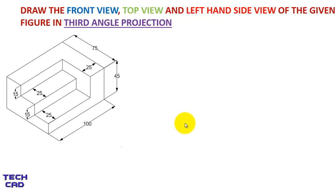Hello students. This is the third question in the series of orthographic projection, and this question belongs to third angle projection. In this question you are going to draw your front view, top view, and left hand side view of the given figure in third angle projection. Let's start the solution.